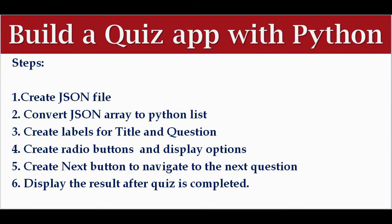The first step is we have to create a JSON file where we can load our questions, options, and the correct answer. Then we are going to convert this JSON array to a Python list so that we can use it in our Python code. We can use tkinter to create labels for the title and question, radio buttons for options, a next button to navigate to the next question, and finally display the score after the quiz is completed.